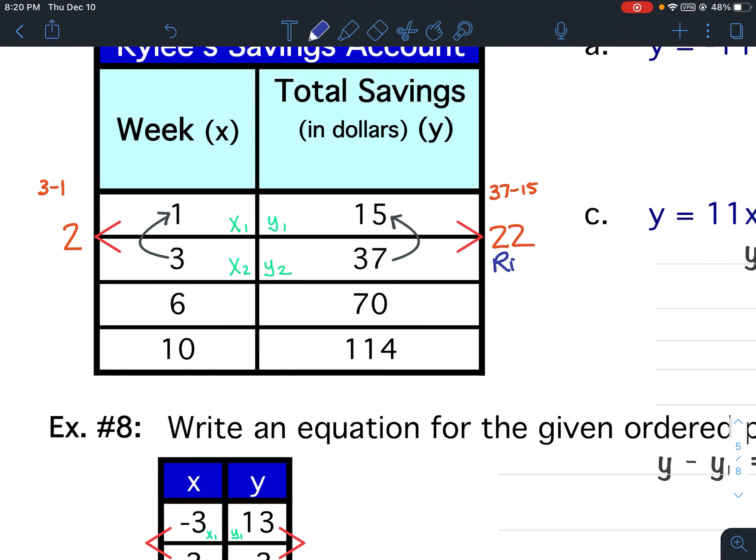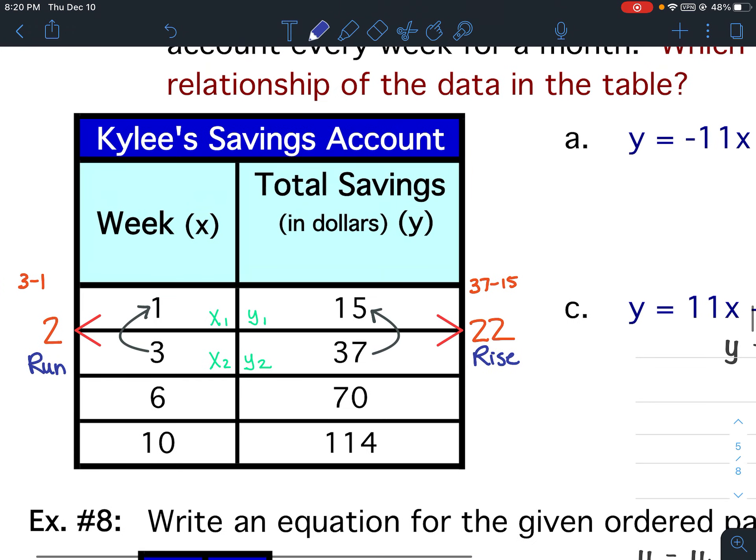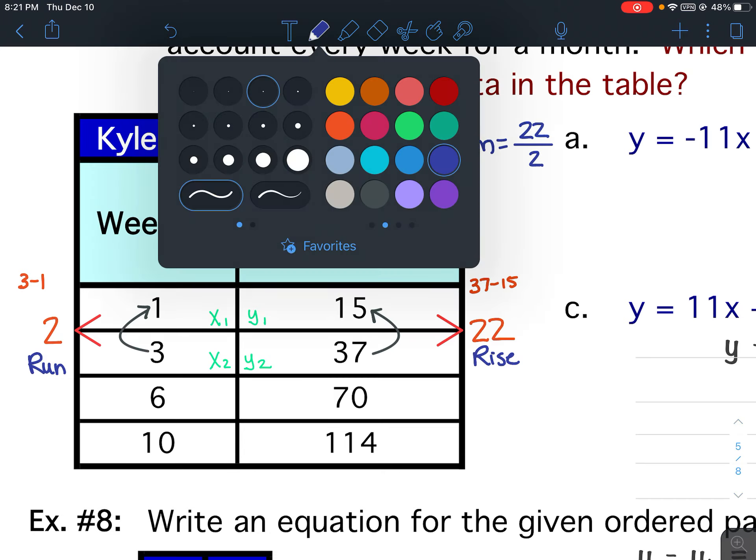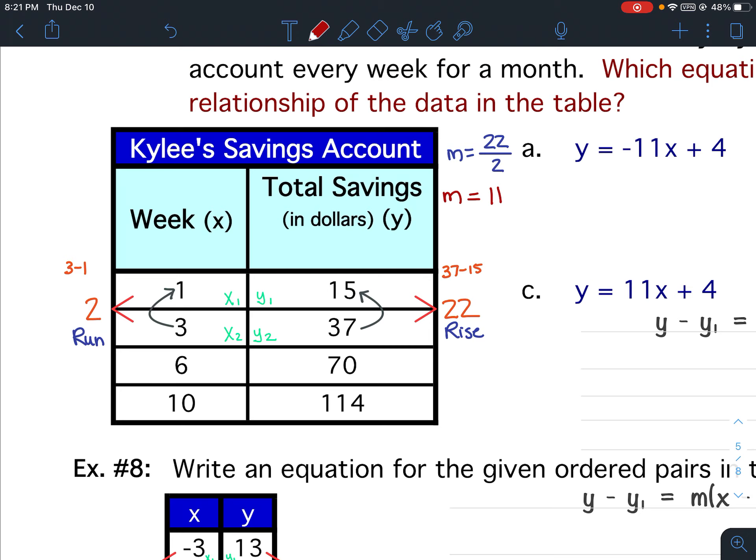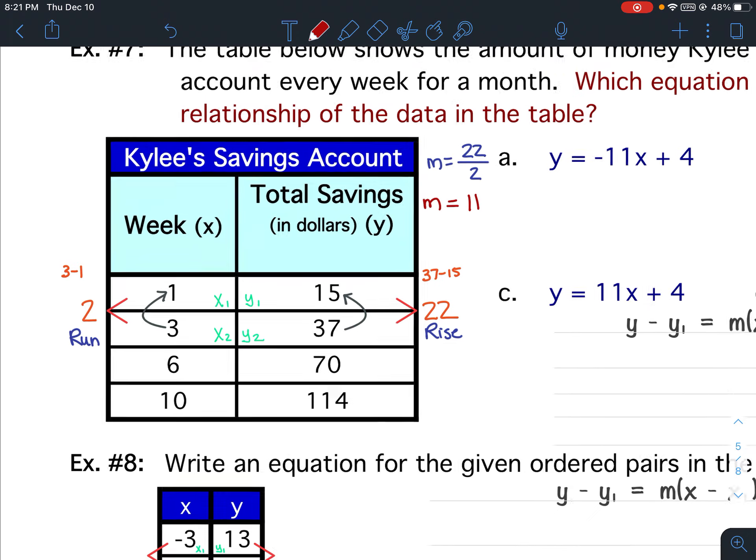This is my rise, because it's my difference in y. This is my run. To find my slope, I put rise over run. And 22 divided by 2 is 11. So my slope is positive 11.